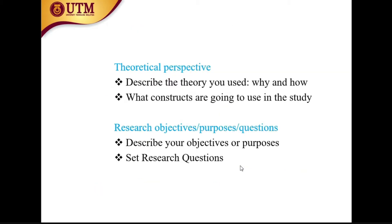In the theoretical perspective section, you will describe what theories you have taken, what variables from these theories you have taken, why you took them, and how you used these variables. After this, you will set your research objectives, purpose, and questions. Some journals may require both objectives and research questions; some require only one or the other. This is the key thing of your investigation.